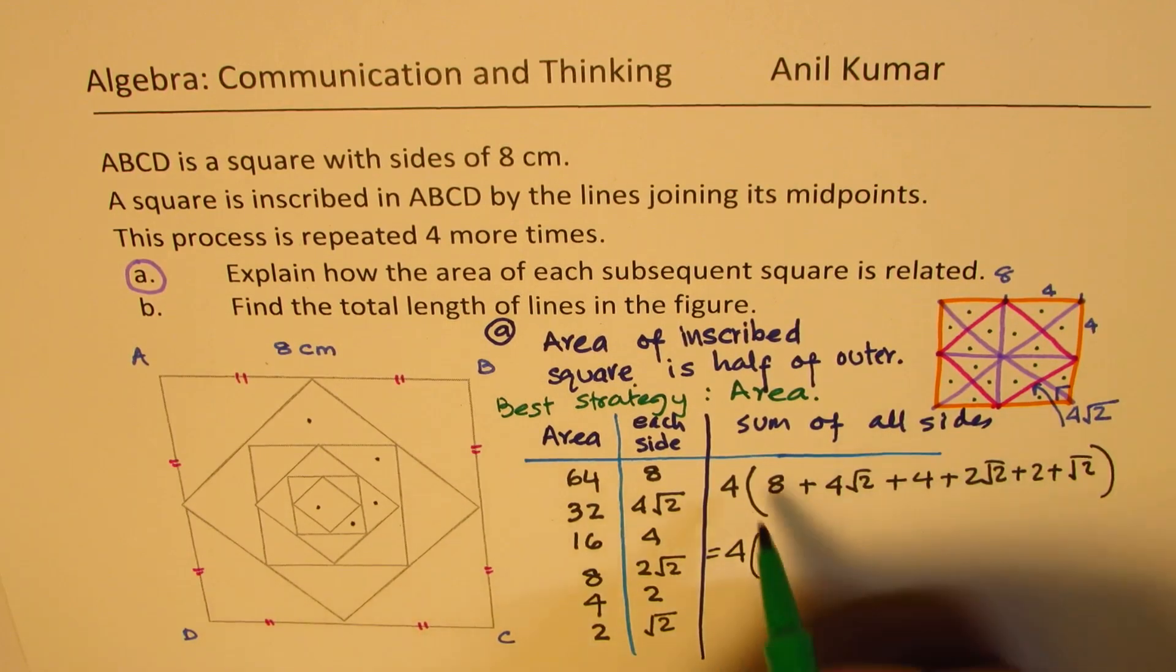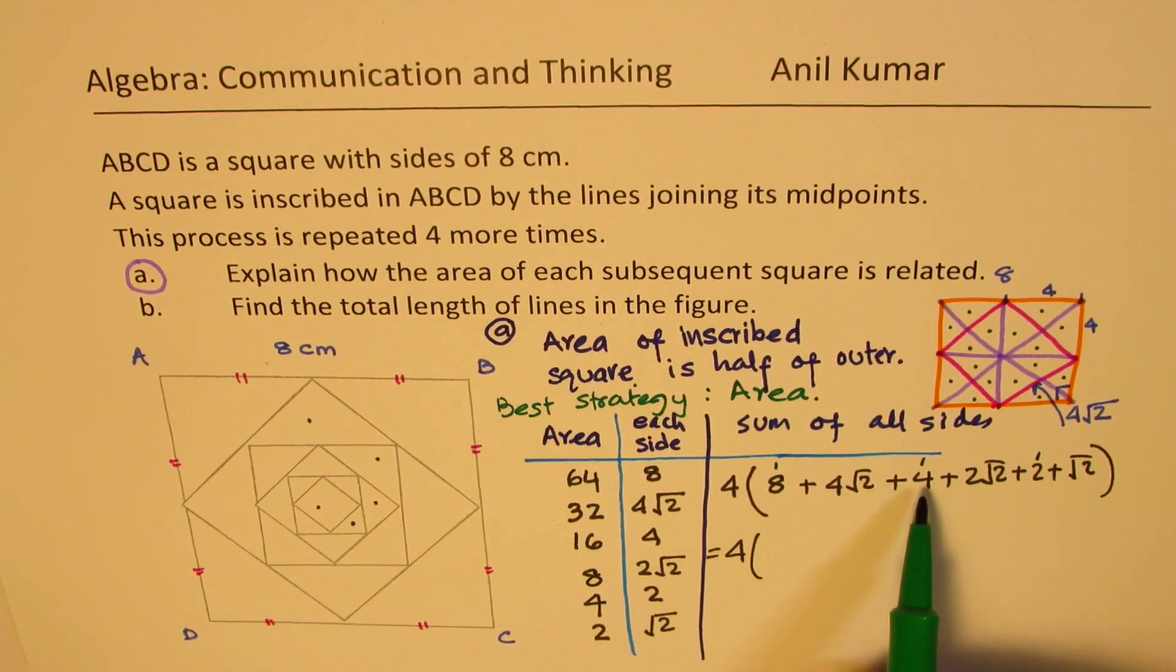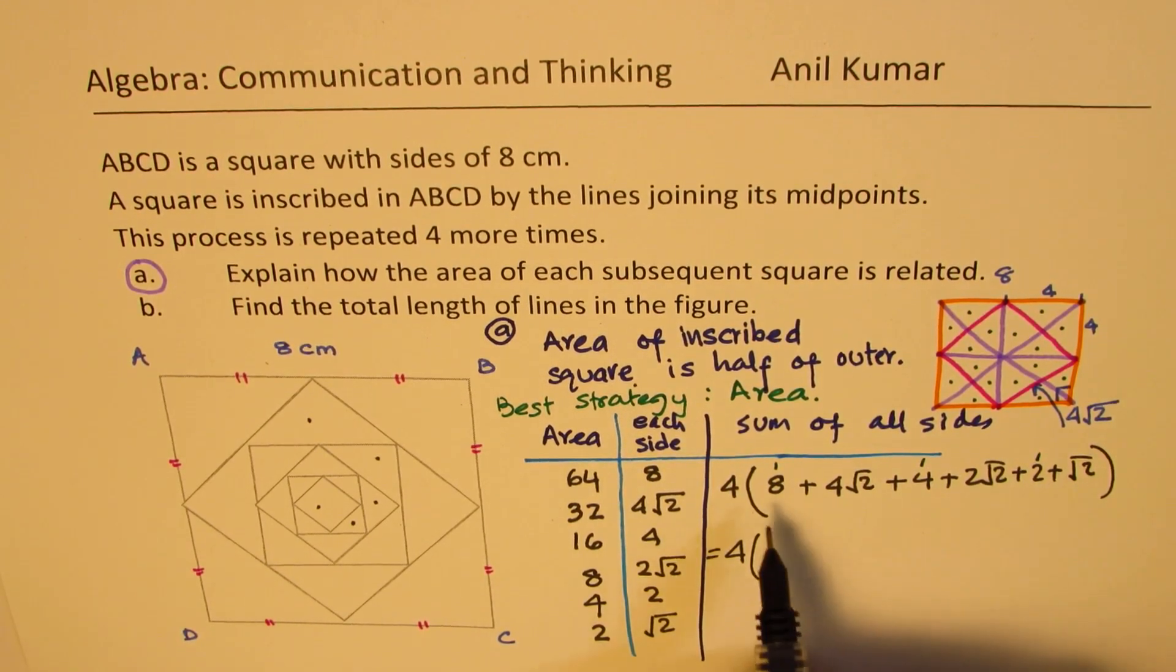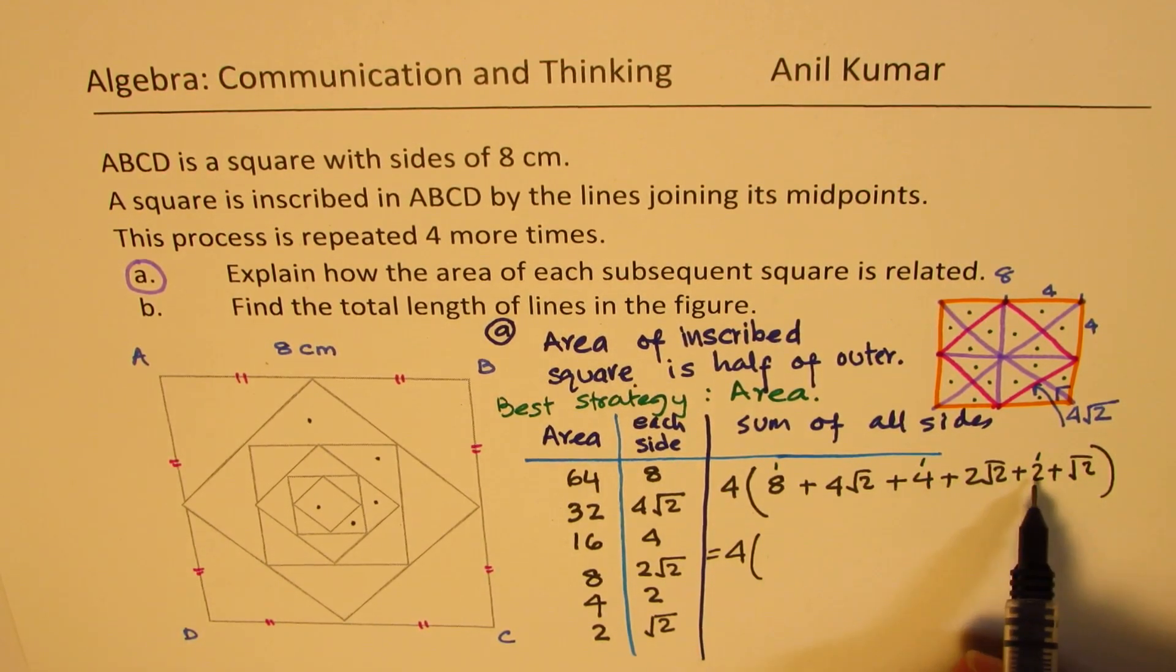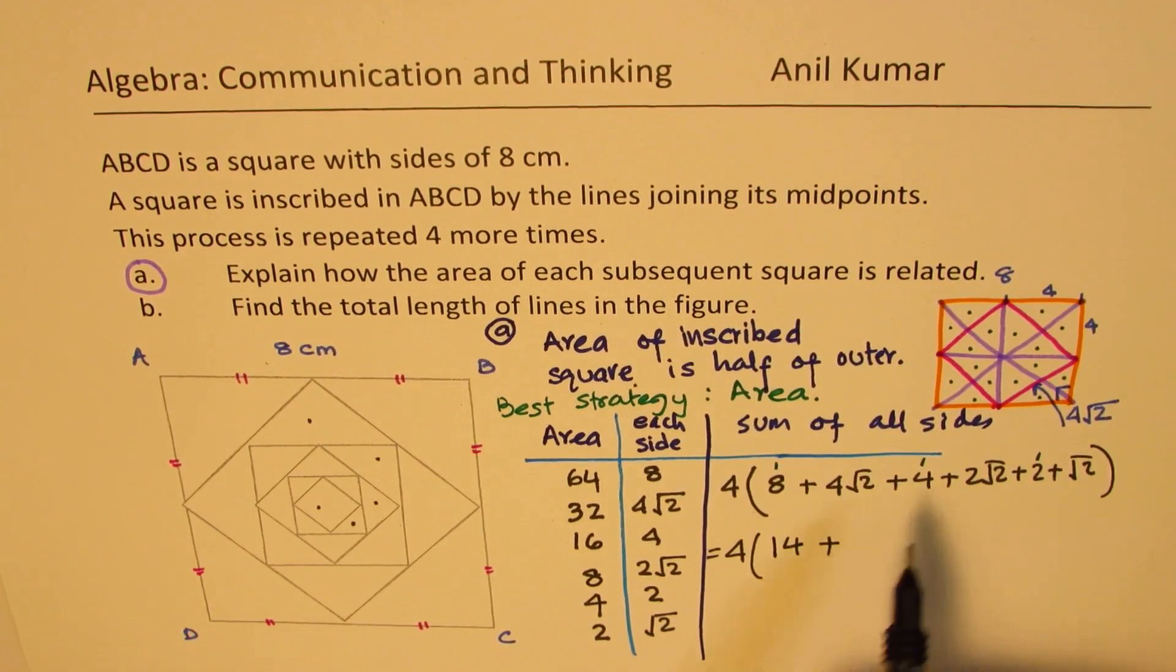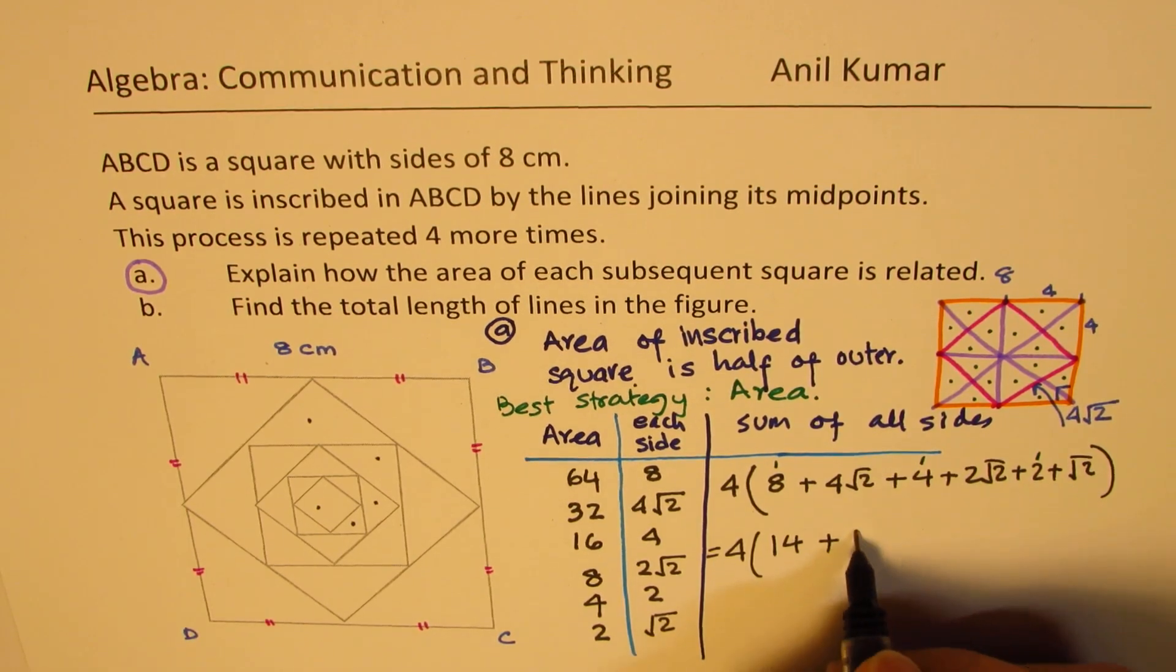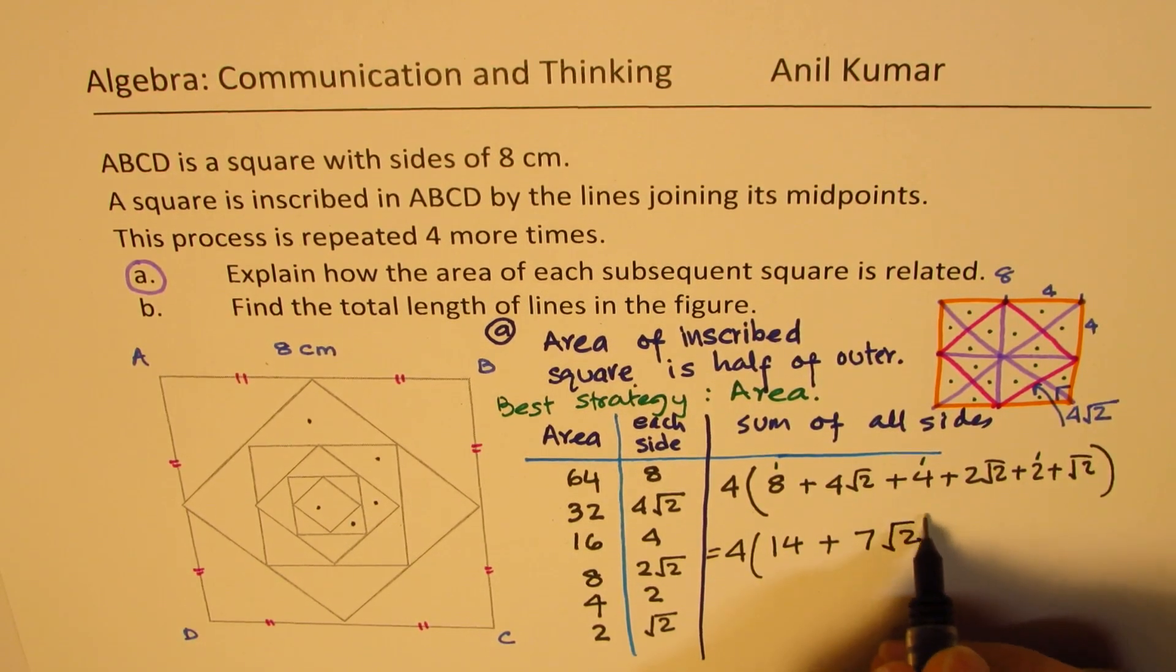Now here we can add the numbers 8, 4 and 2. So 8, 4 is 12 plus 2, 14. 8 plus 4 is 12 plus 2, 14. So we get 14 plus. Now here for the square root terms, we get 4 square root 2, 2 square root 2 and just square root 2. 4 plus 2 is 6. 6 plus 1 is 7. So we get 7 square root 2. Is that clear to you?